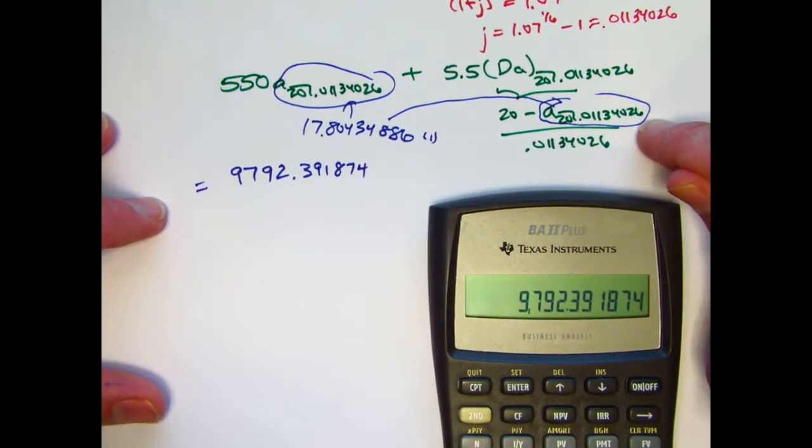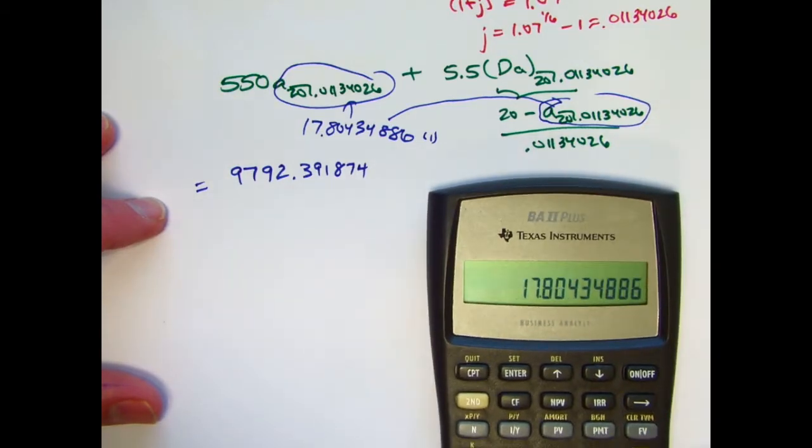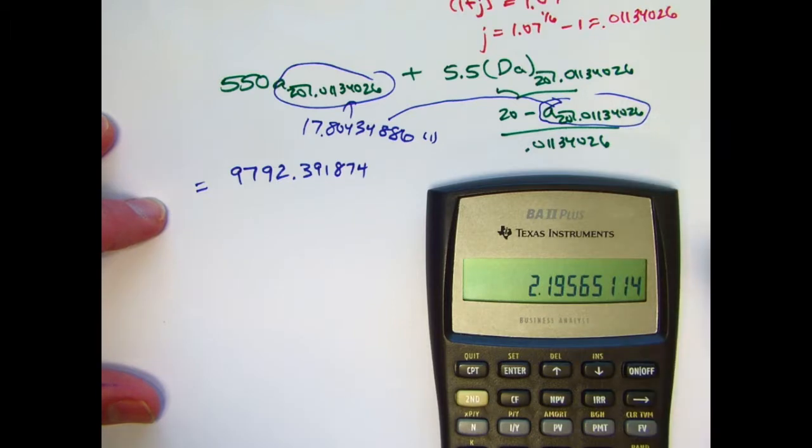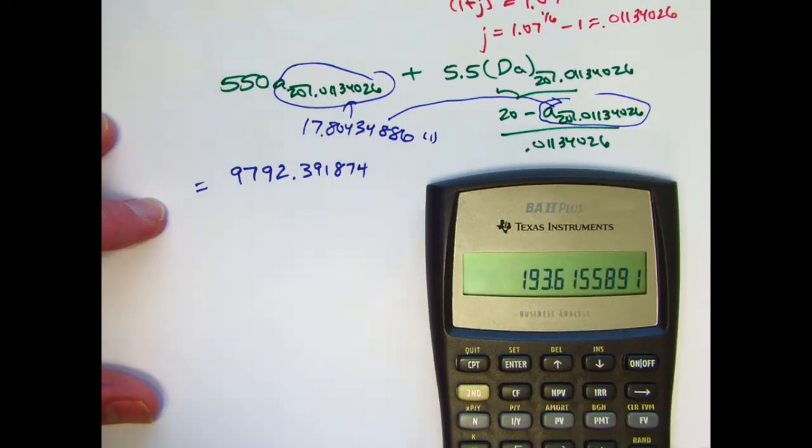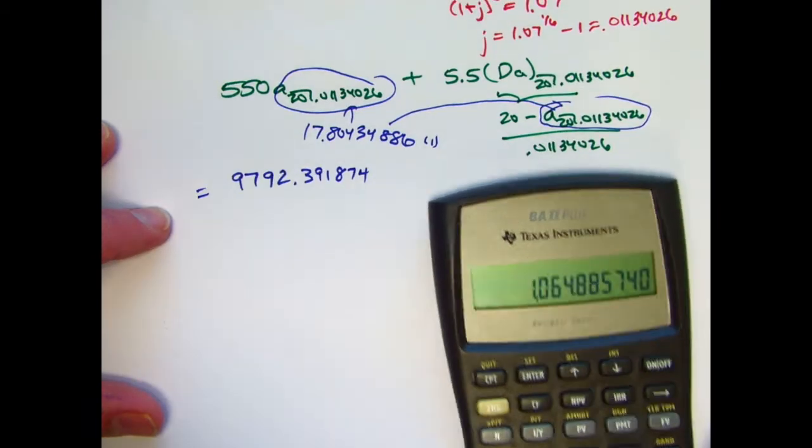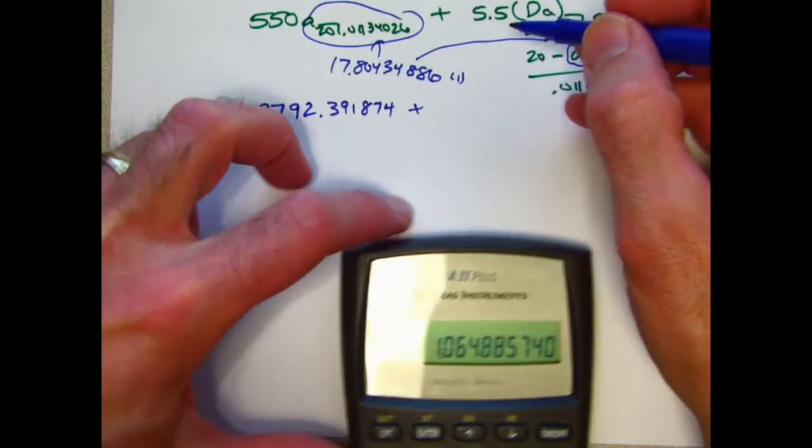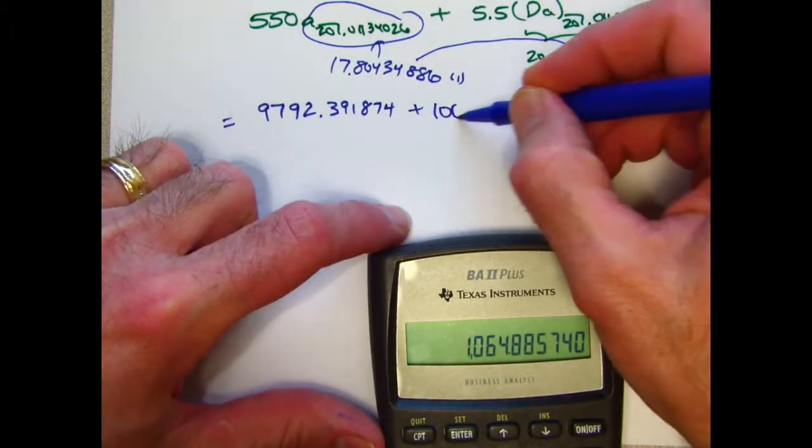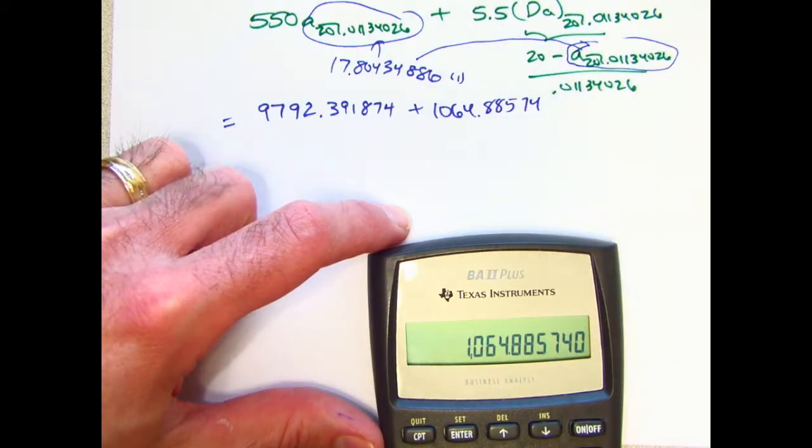With this one, let's go back to what's in register 1. Recall 1. I need to subtract that from 20. Then divide by that thing which is in register 0. Get this, multiply by 5.5, and I get 1064.88574.